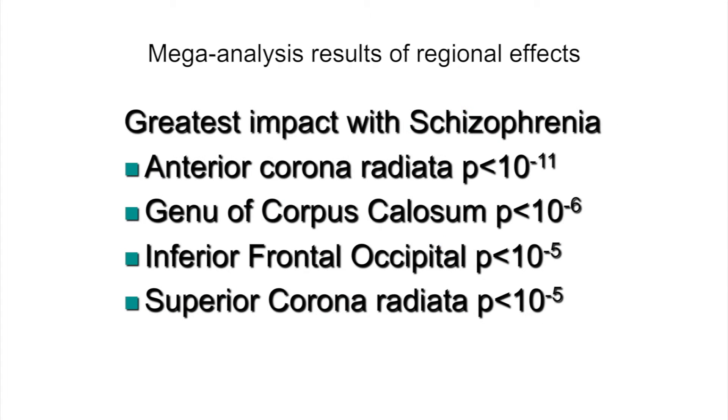Now, if we do it mega genetic analysis, everything becomes very simple, because we basically have just one page of subjects, and there we can see that the regions that show up at the top of the significance list are the same regions that typically pop out in the individual studies. And that's anterior corona radiata, genu of corpus callosum, inferior frontal occipital, superior corona radiata. So all the areas that tend to serve multimodal areas, and tend to be affected in schizophrenia.